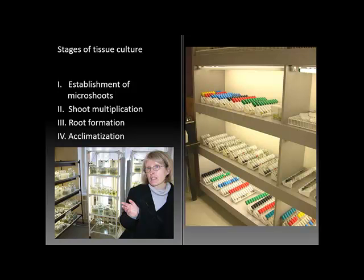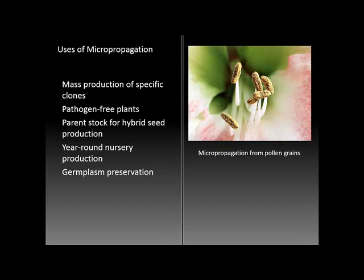How is micropropagation used? At the heart of it is mass production of specific clones, production of pathogen-free plants, and parent stock for hybrid seed production. Most nurseries, especially in our part of the world, are only able to operate during the growing season. So the ability to use micropropagation provides jobs and employment for propagators and growers even in the wintertime, helping to stabilize the workforce over the entire year.